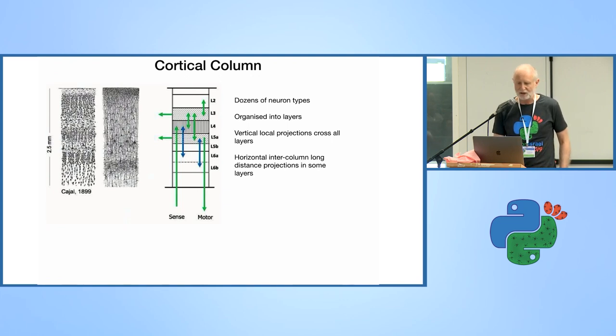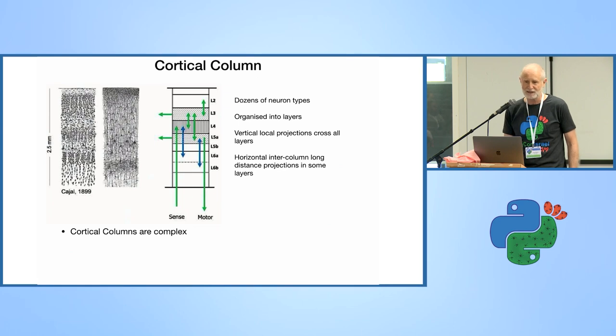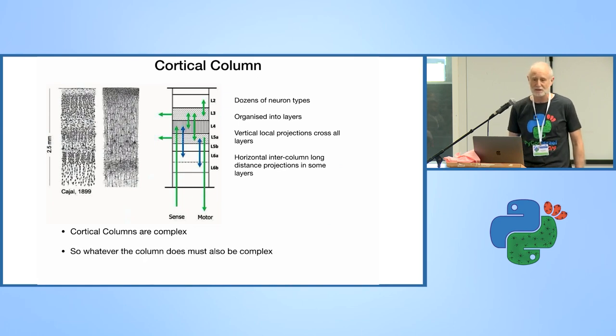You can see here micrographs of the cortical column. What stands out is that it's divided into layers. There's lots of different types of neurons. The neurons are all lined up in what's called mini columns. There's many connections between layers, and there are lateral connections that go out between cortical columns and to other places in the brain. So what we're looking at is something that's pretty complicated. They're very complex, which means they must be doing something really complex. Whatever they're doing, that's what your neocortex is doing.